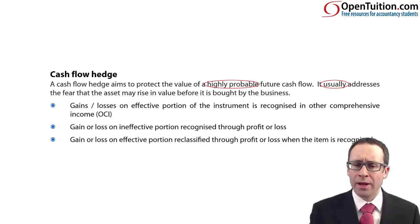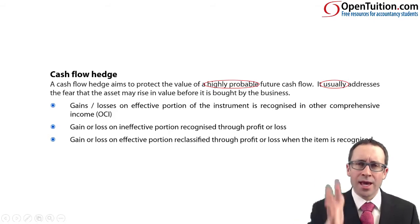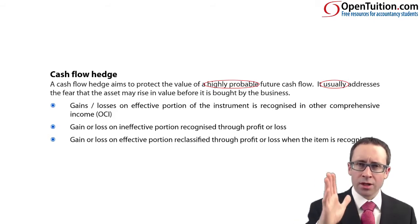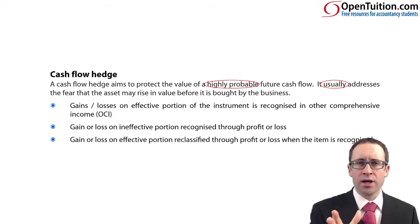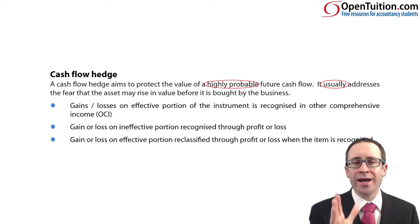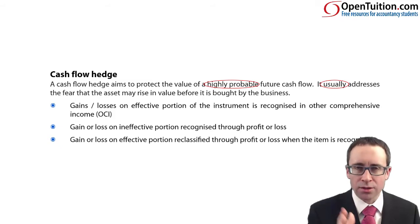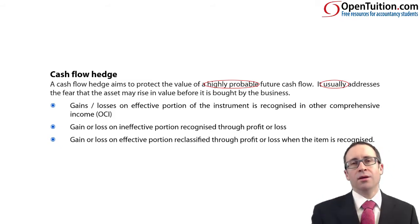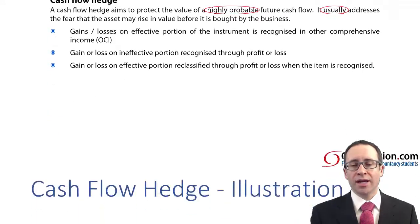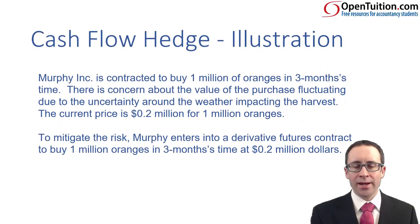We'll come back to effective and ineffective a little bit later on. The key point: gains and losses on the instrument are shown in OCI until the item is bought, and then we do a bit of recycling.